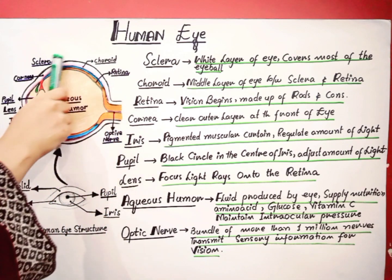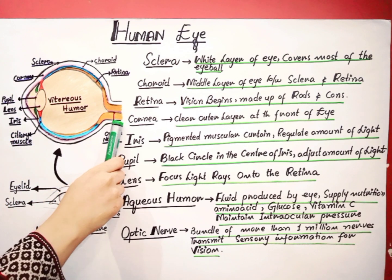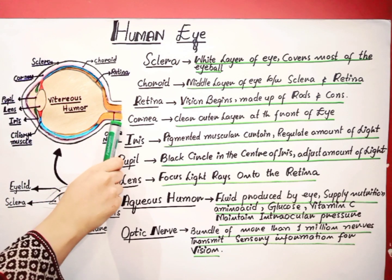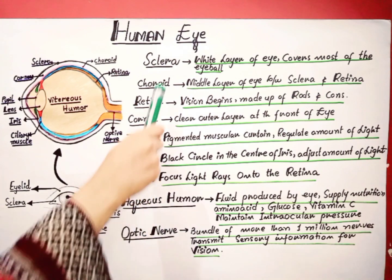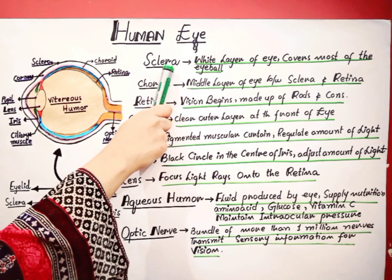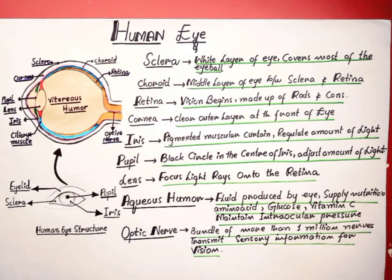The sclera is made up of a thin membrane which is called the conjunctiva. When you learn about the sclera, you have to remember this important membrane structure called the conjunctiva. The conjunctiva and the sclera together lubricate the eye and protect it from microbes.